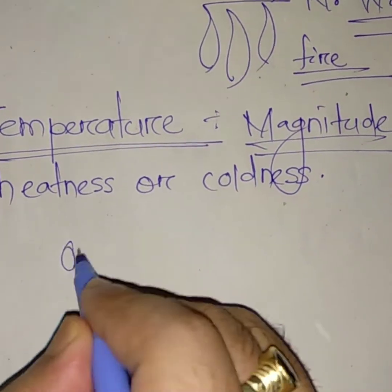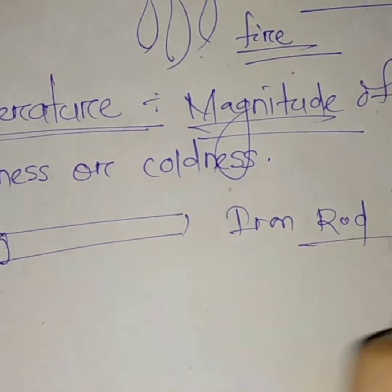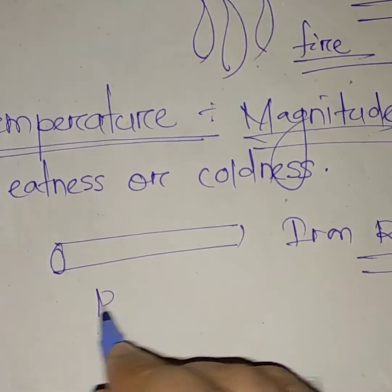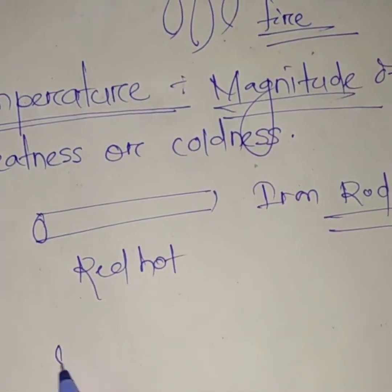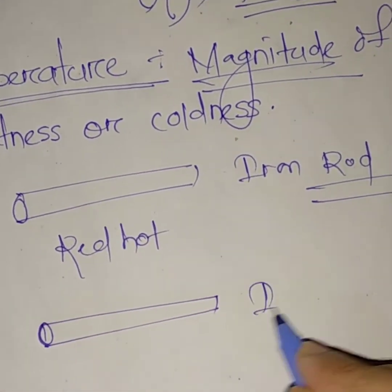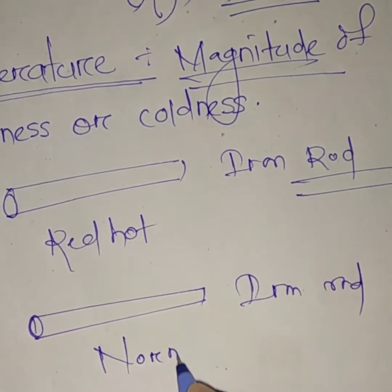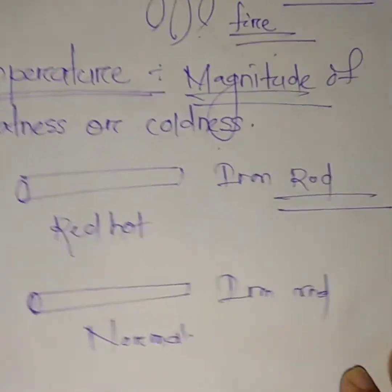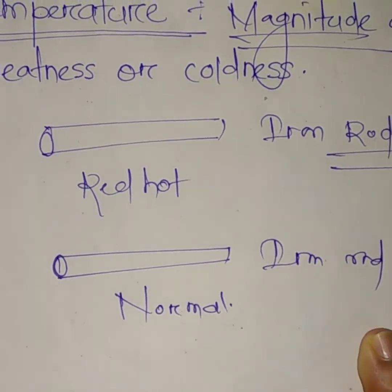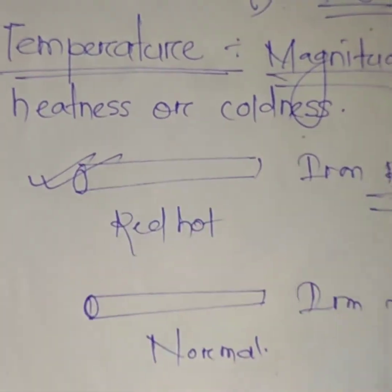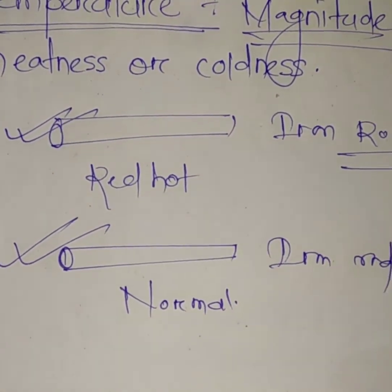Imagine there is an iron rod that is very hot — completely red hot. And here is another iron rod that is completely normal. If you are asked to hold both, if you hold the red hot one, your hand will get burned. But the normal one won't harm your hand.